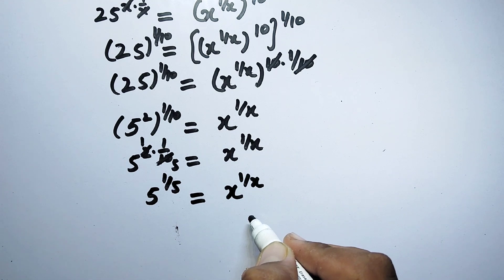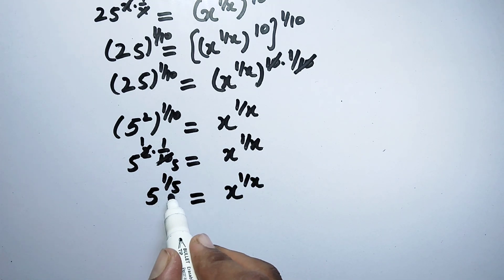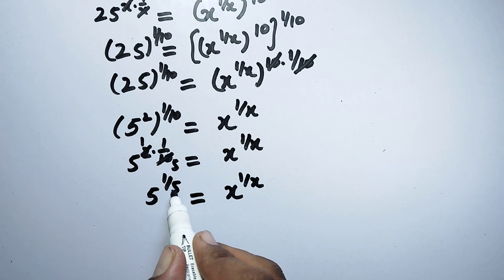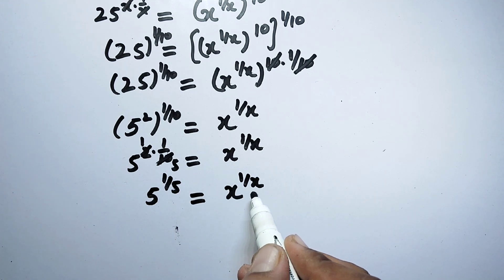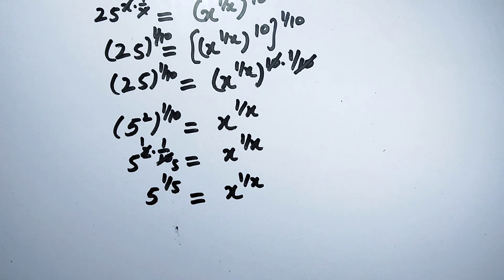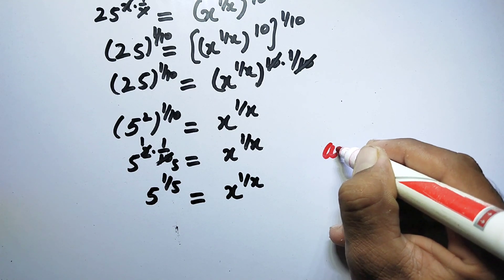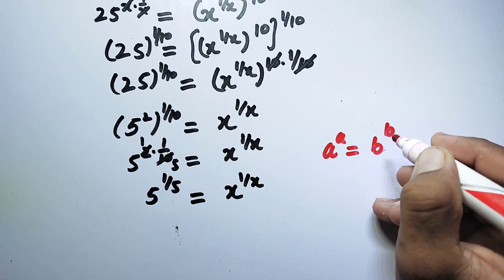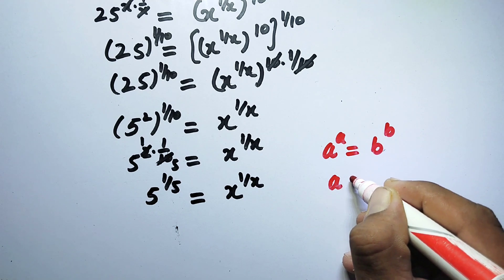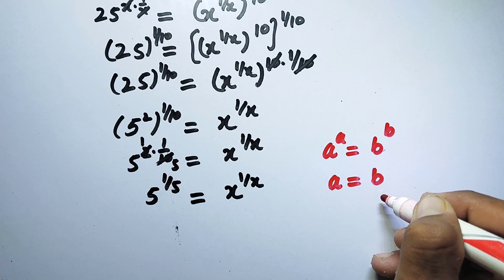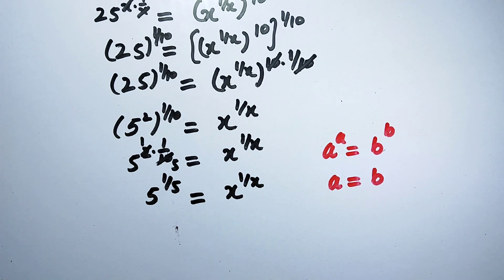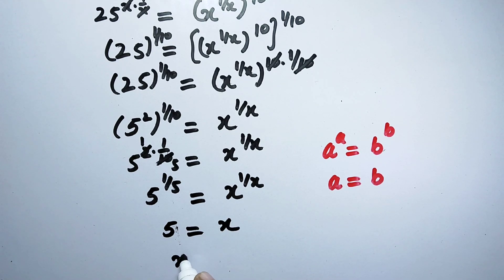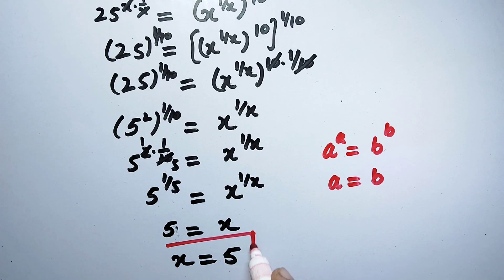So now here we can see that there is a repetition in the values on the left hand side of the equation as well as the right hand side. We can apply a rule here: if a to the power a is equal to b to the power b, then a is equal to b. Therefore here we get x is equal to 5. So here is the value of x, the solution to this problem.